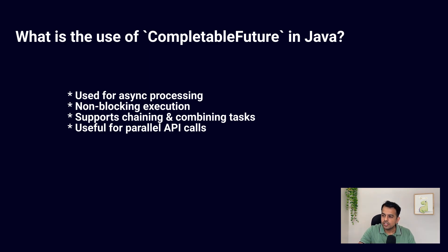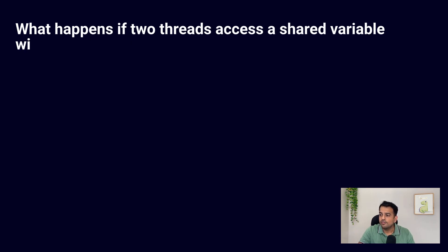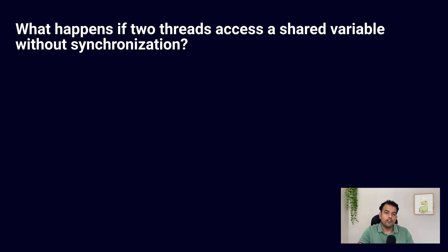The next question is also on concurrency: what happens if two threads access a shared variable without synchronization?